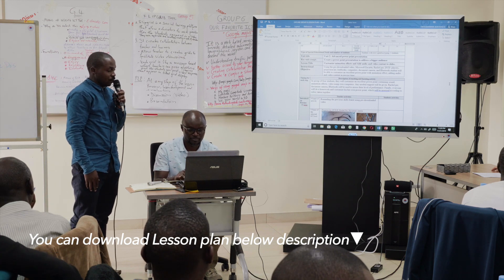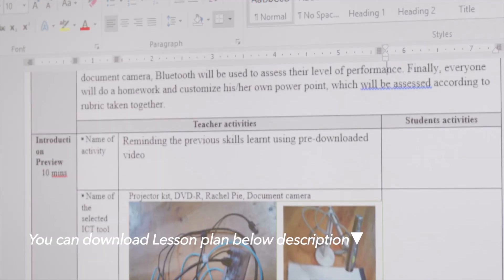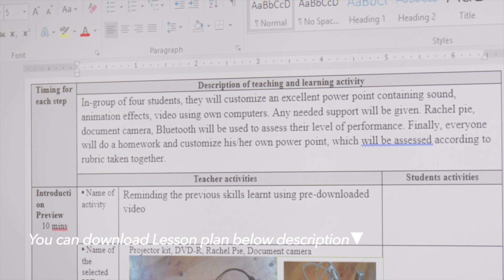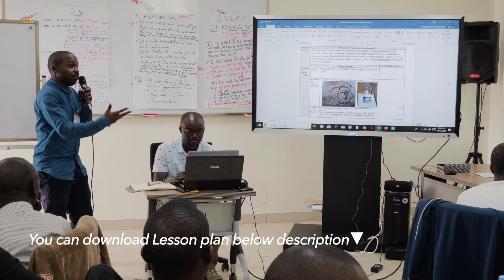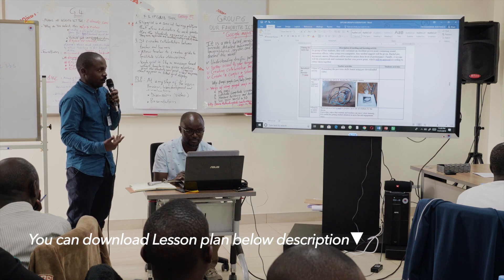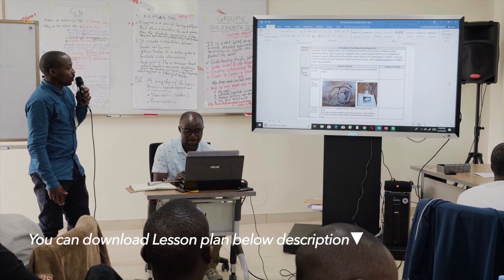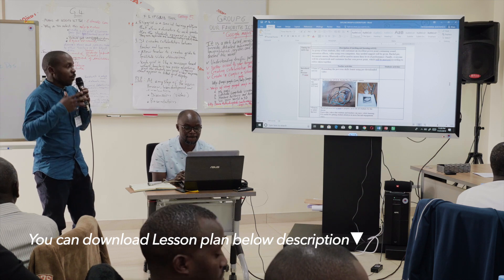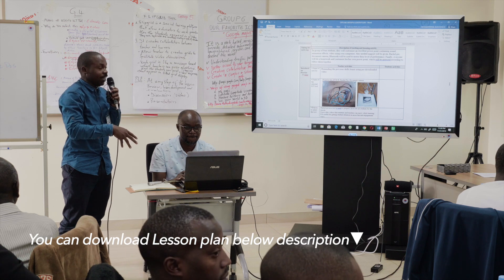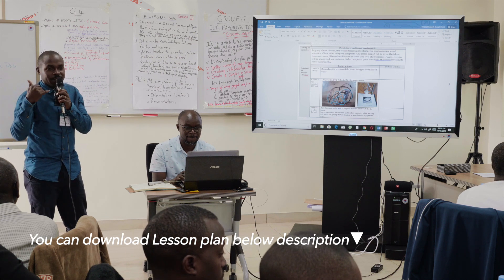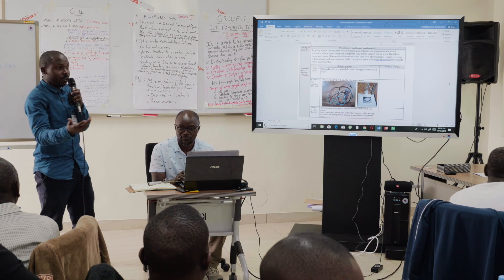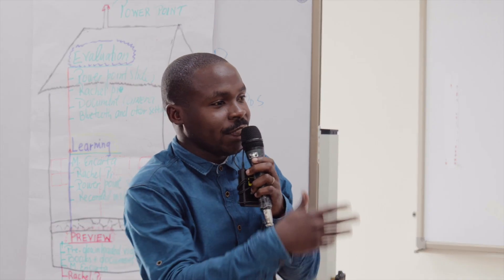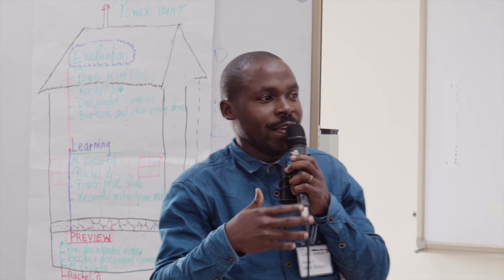The selected ICT tools include a projector, DVD readers — we can copy videos to DVDs and put them in students' laptops for playback. We can also use RetroPie, which works offline. We download the content, put it on the RetroPie, and then many devices such as laptops or smartphones can connect to it. I can instruct students to connect their devices to RetroPie and search for where the work is stored.